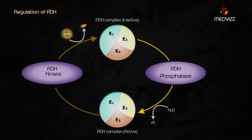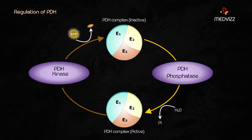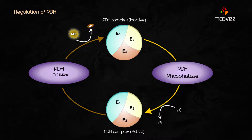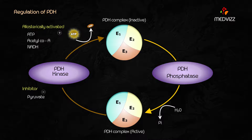The PDH complex is regulated directly through phosphorylation. PDH kinase and PDH phosphatase are part of the PDH complex and act on E1. Phosphorylation through PDH kinase inhibits E1, while dephosphorylation through PDH phosphatase activates E1. PDH kinase is activated — leading to inactivation of E1 — mainly by ATP, acetyl-CoA, and NADH, while PDH kinase is inhibited — leading to activation of E1 — mainly by pyruvate.